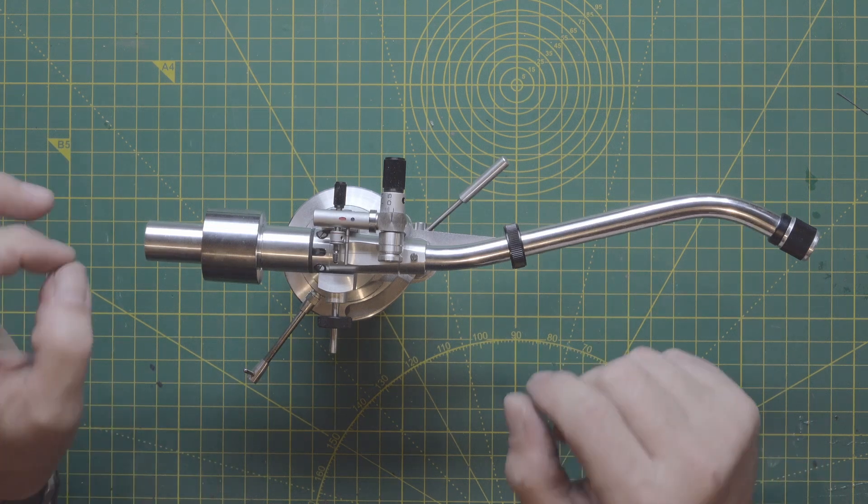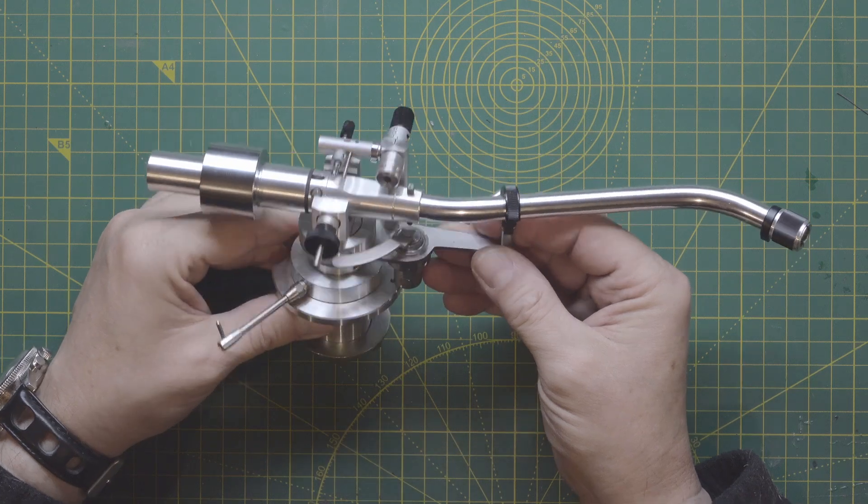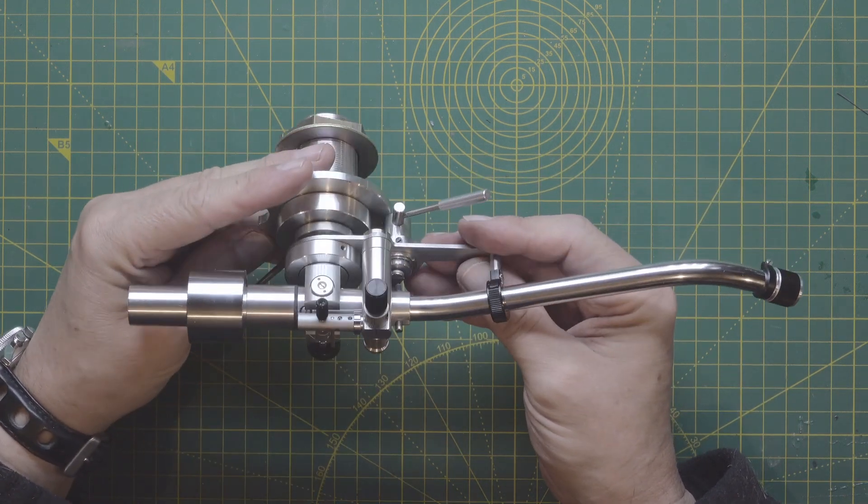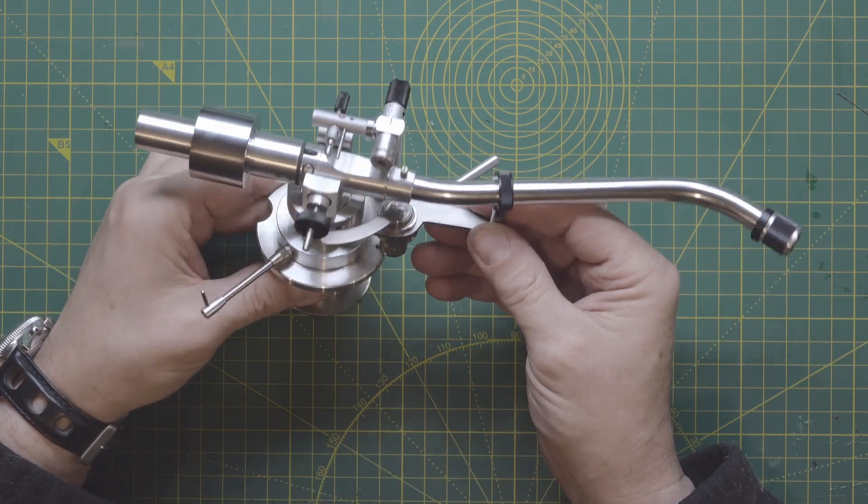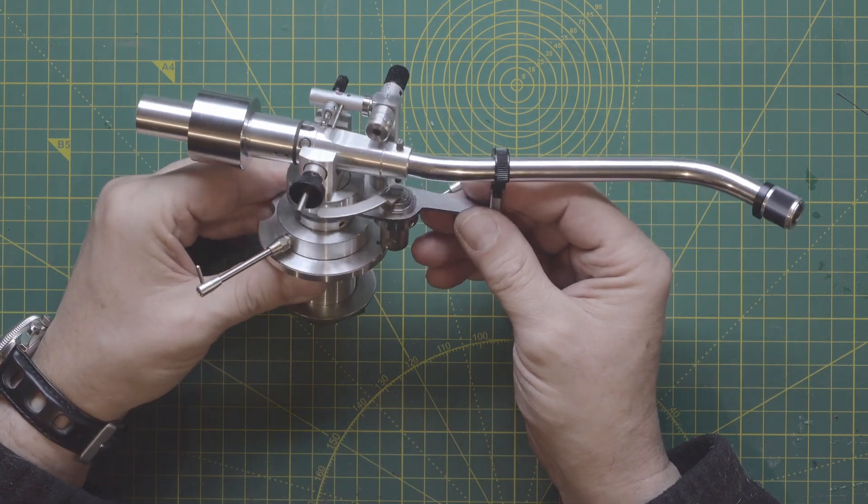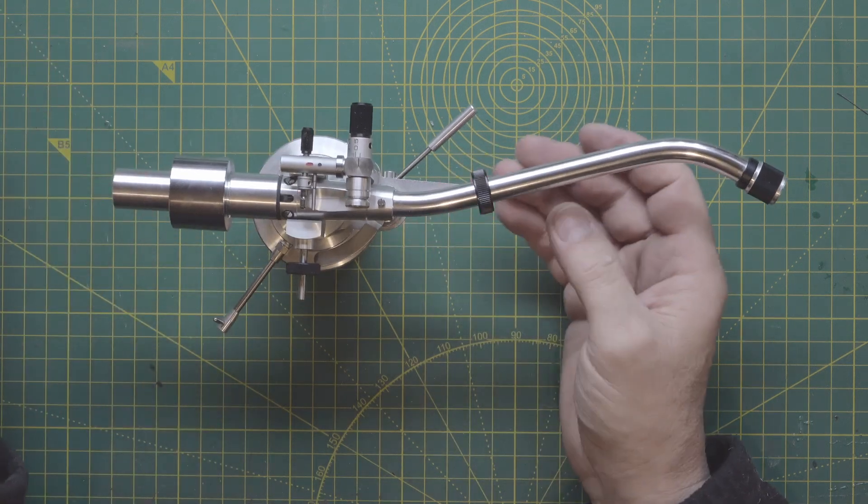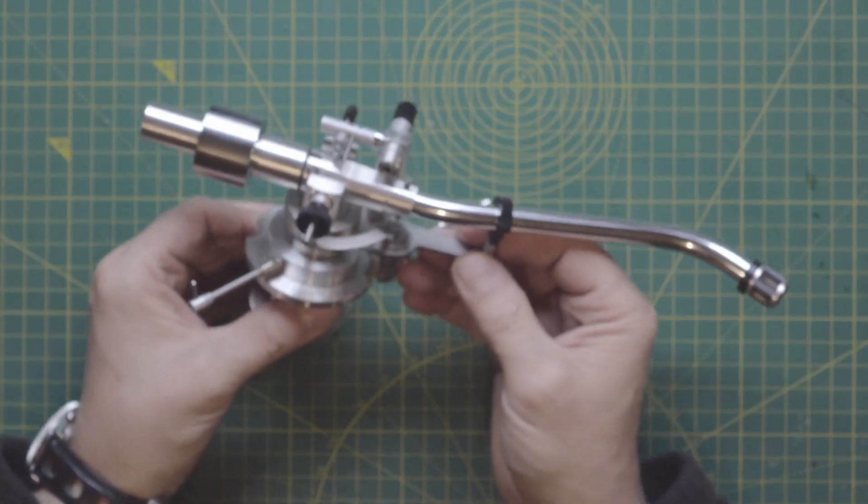Ladies and gentlemen, today we have a piece of art, a Micro Seiki MA-505. This is one of the better made tonearms ever. The finishing is so gorgeous, isn't it?